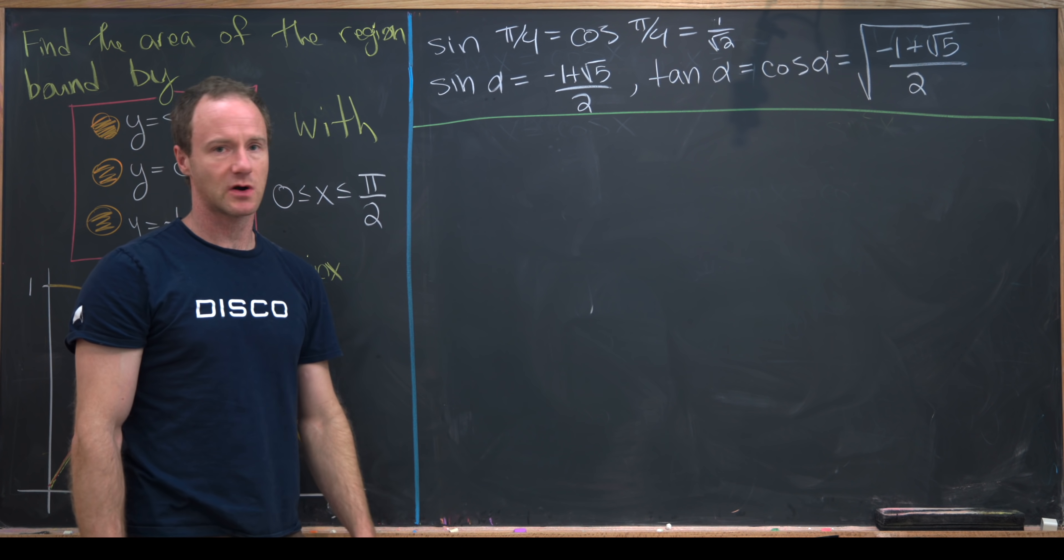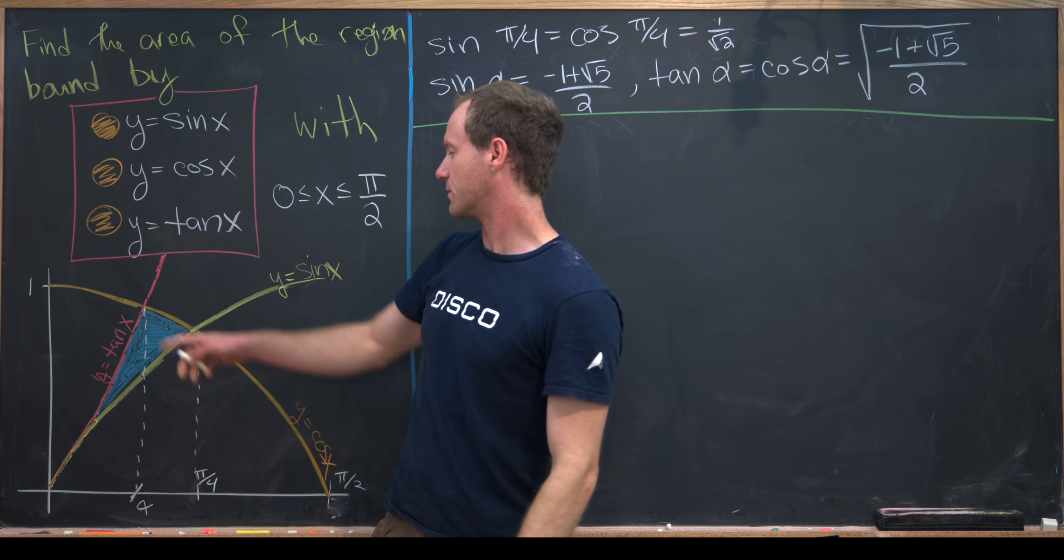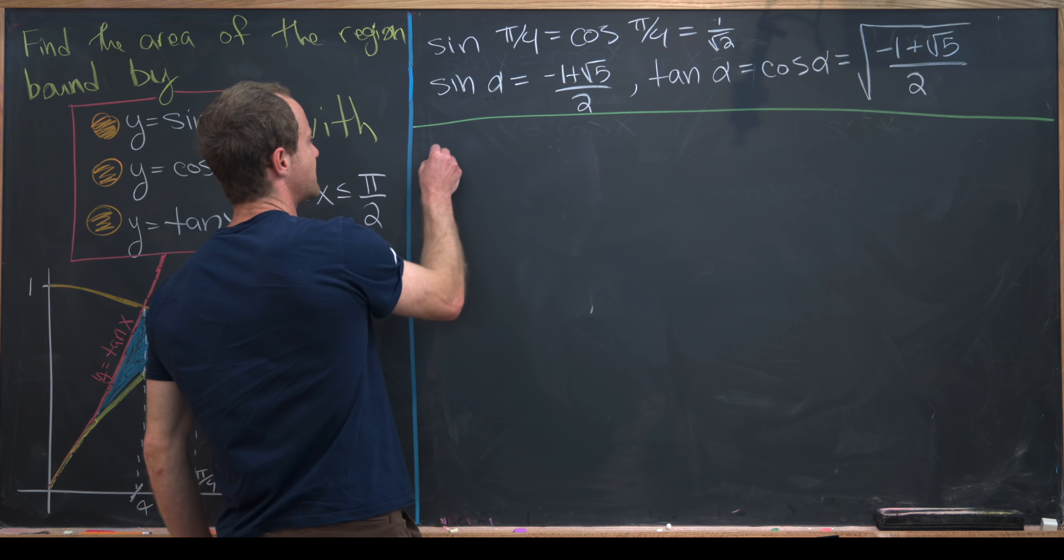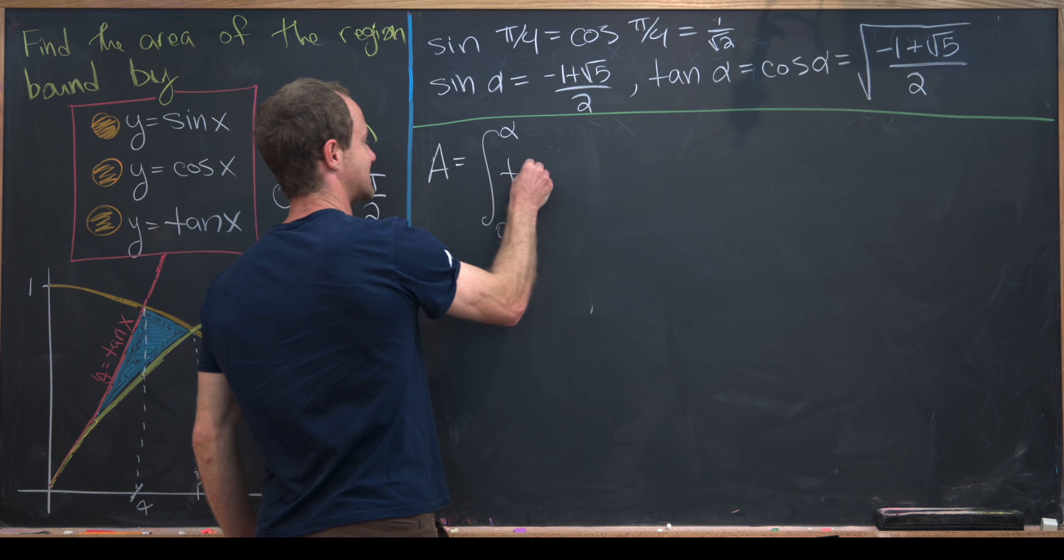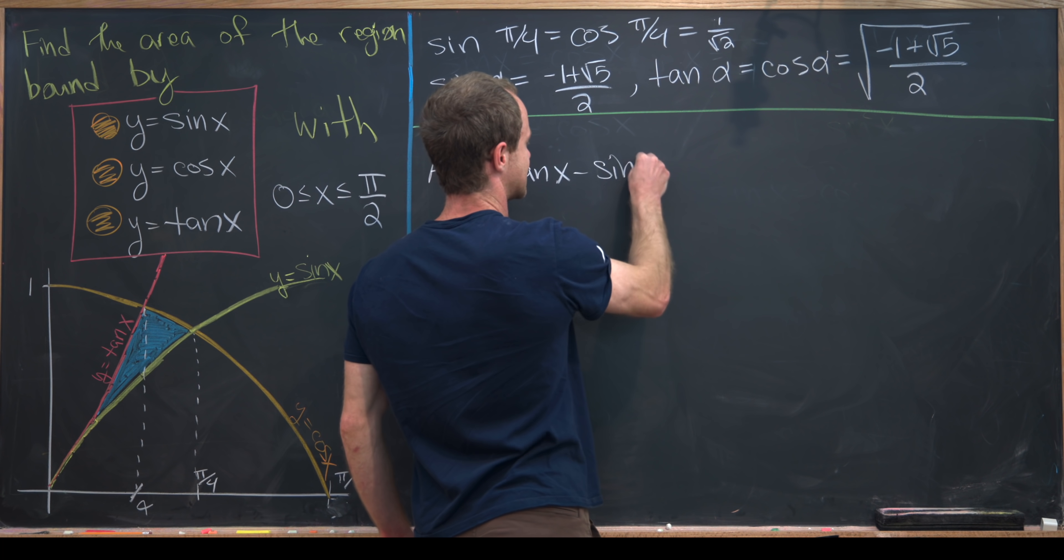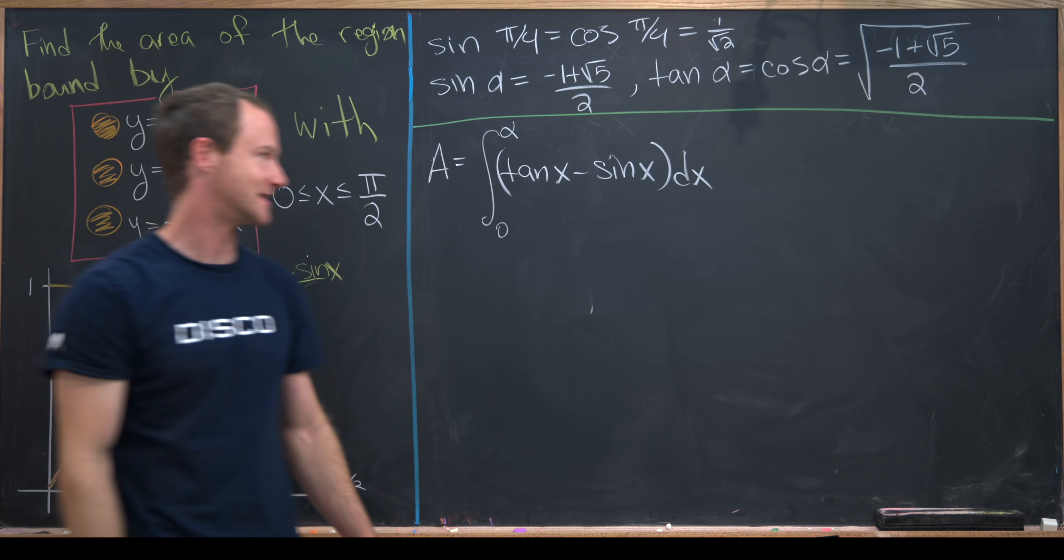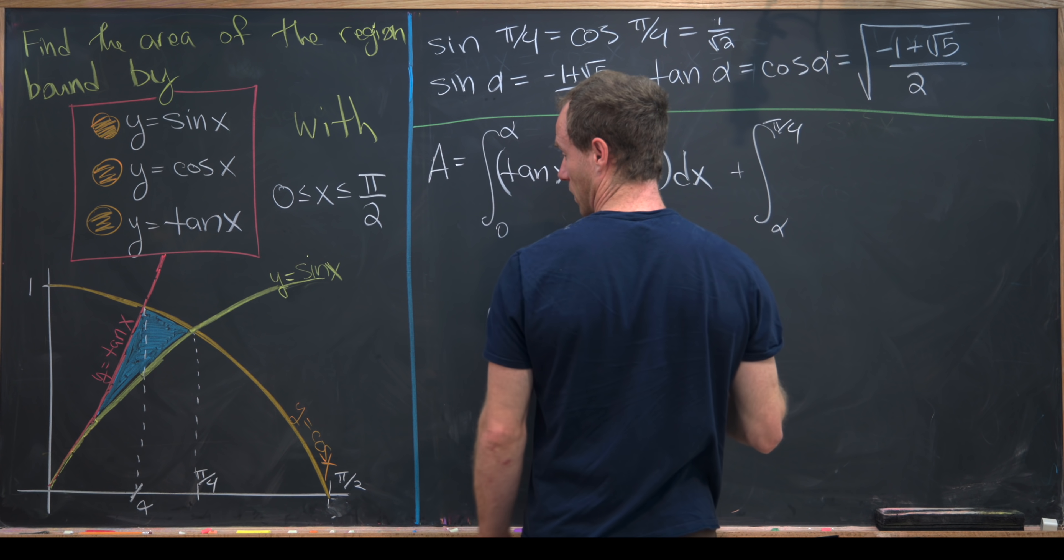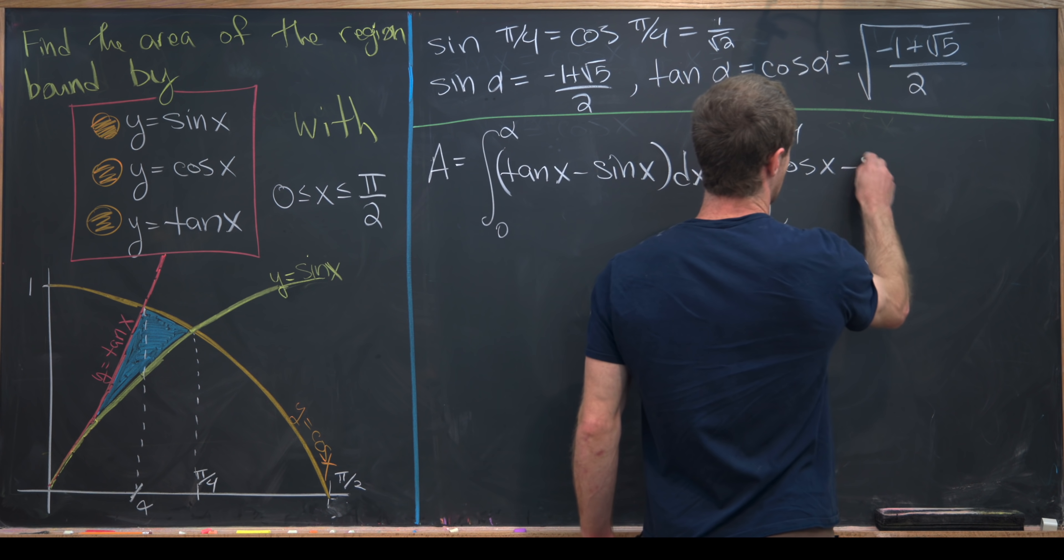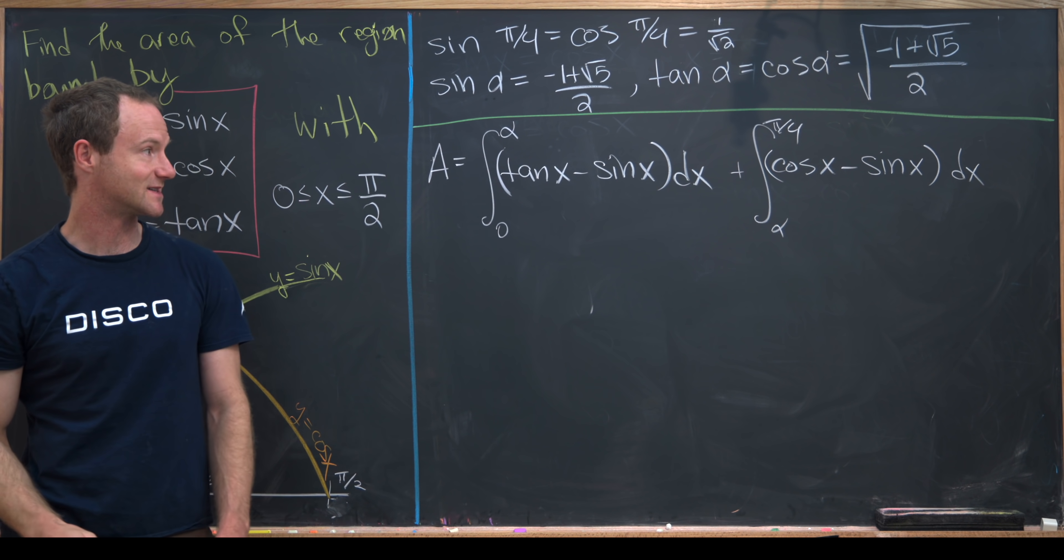Now that we've got all of these parts in place, we're ready to calculate this area, which is the area described in words up here, but I've shaded it in blue. So let's call our area capital A. Notice we need to take the integral from 0 to alpha of tangent minus sine—that's tan x minus sine x—because between 0 and alpha, tangent is the upper curve and sine is the lower curve. Then we need to add that to the integral from alpha to pi over 4 of cosine of x minus sine of x, because in this region, cosine is the top curve and sine is the bottom curve.